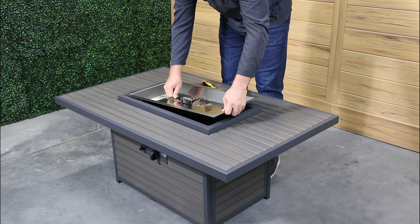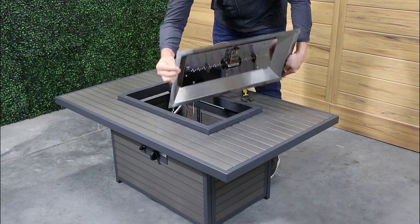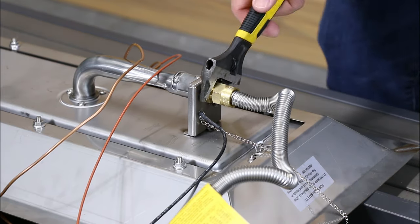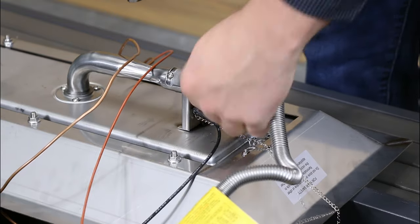Remove crystal fire burner from fire pit top. Disconnect the metal flex line from the burner orifice.